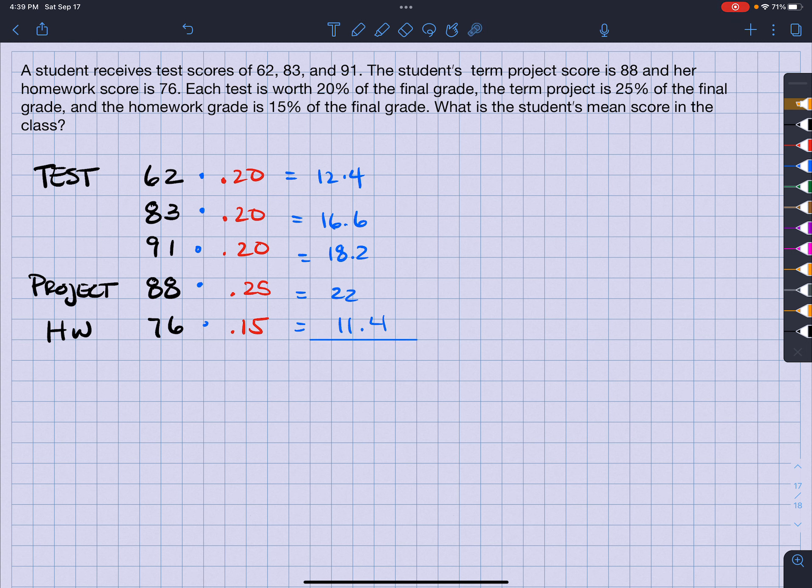So what I want to do is, because these are all partial of my total grade, I'm going to add these together to find out what my average is in the class. So I'm going to take 12.4, add it to 16.6, and add it to 18.2, and add it to 22, and add it to 11.4. And my average comes out to be 80.6.